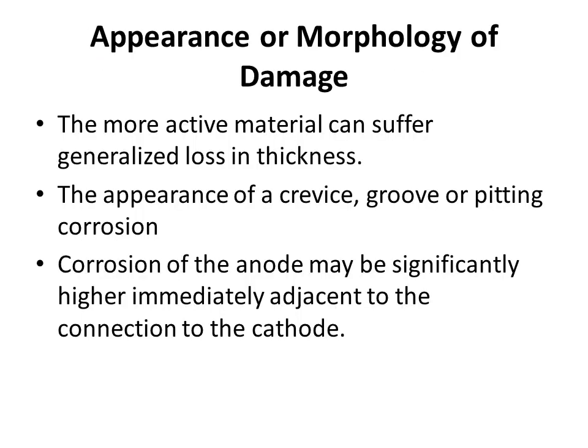Appearance or morphology of damage: galvanic corrosion happens at welded and bolted connections. The more active material can suffer generalized loss in thickness. Crevice, groove, or pitting corrosion is the typical appearance of galvanic corrosion. Corrosion of the anode may be significantly higher immediately adjacent to the connection to the cathode.